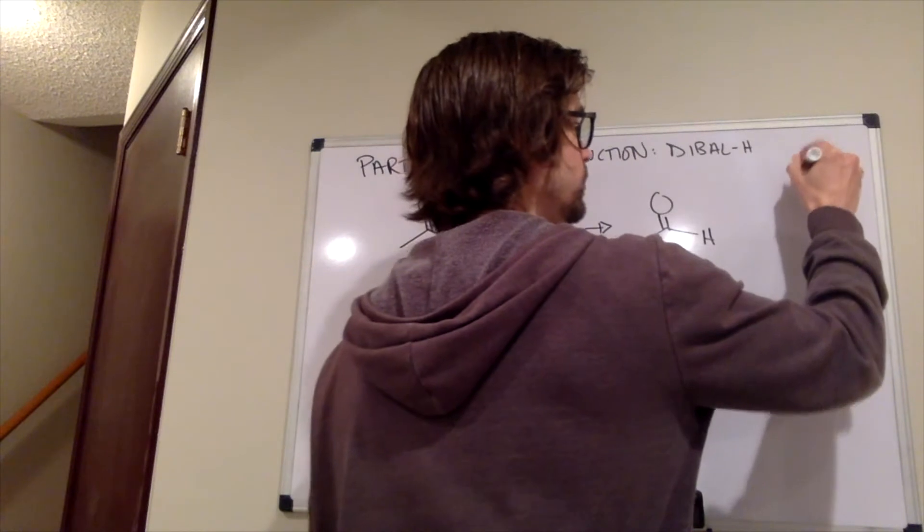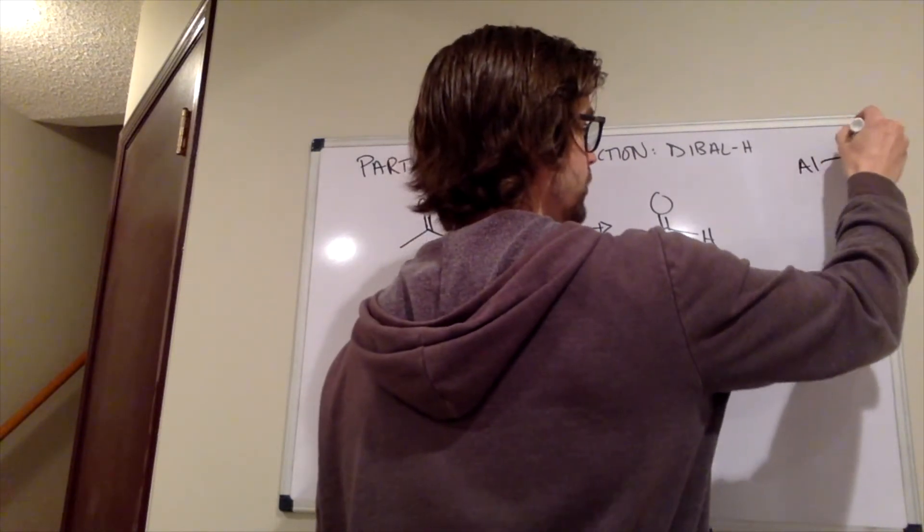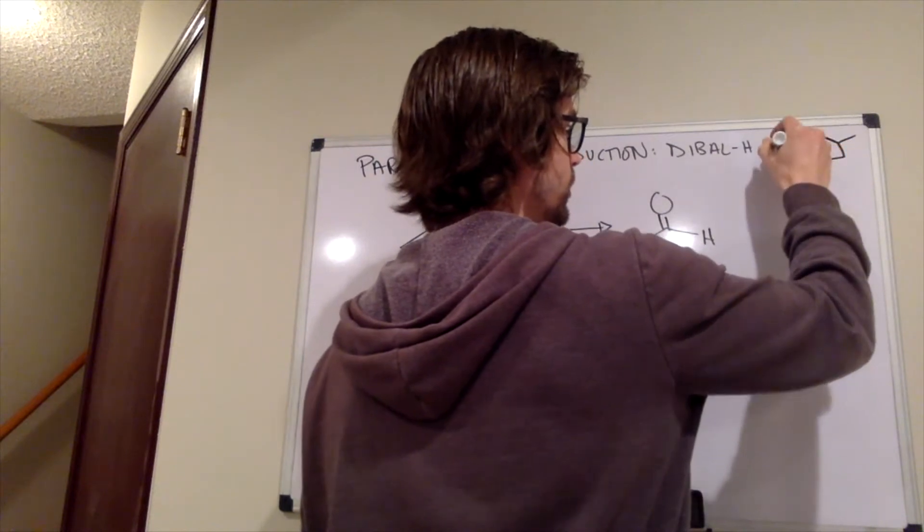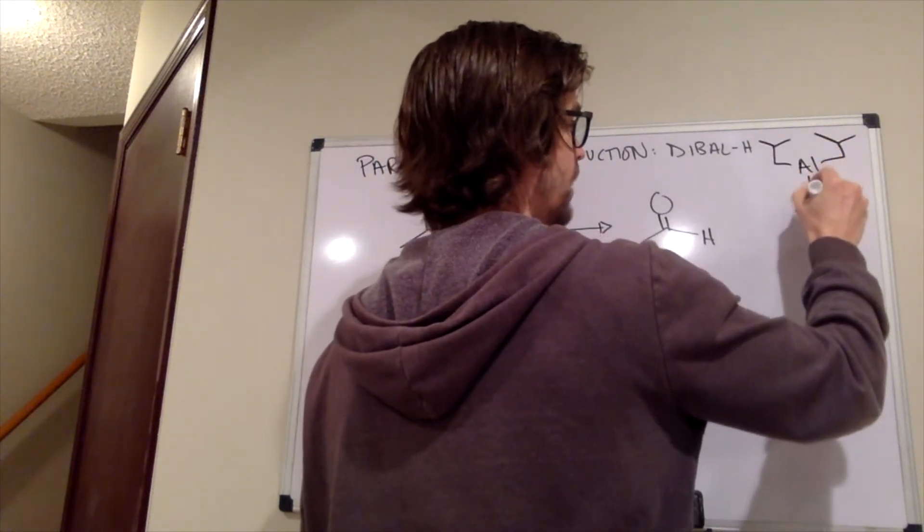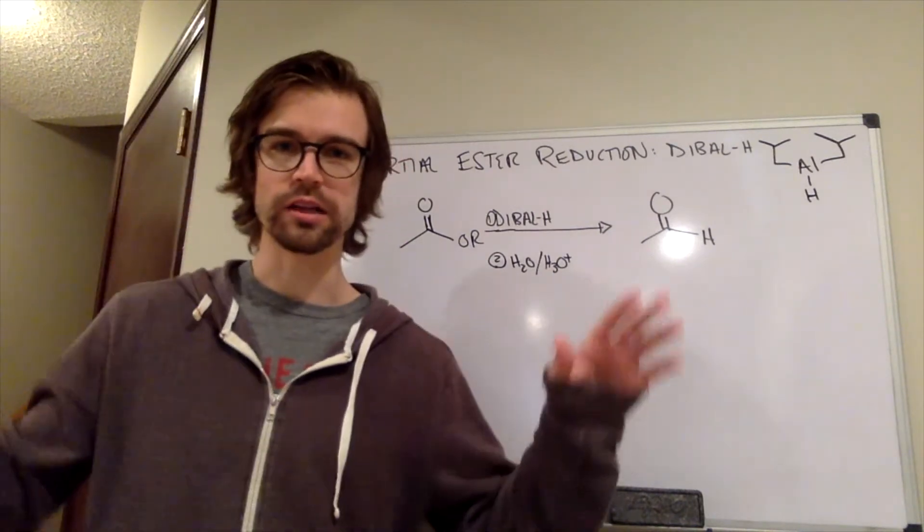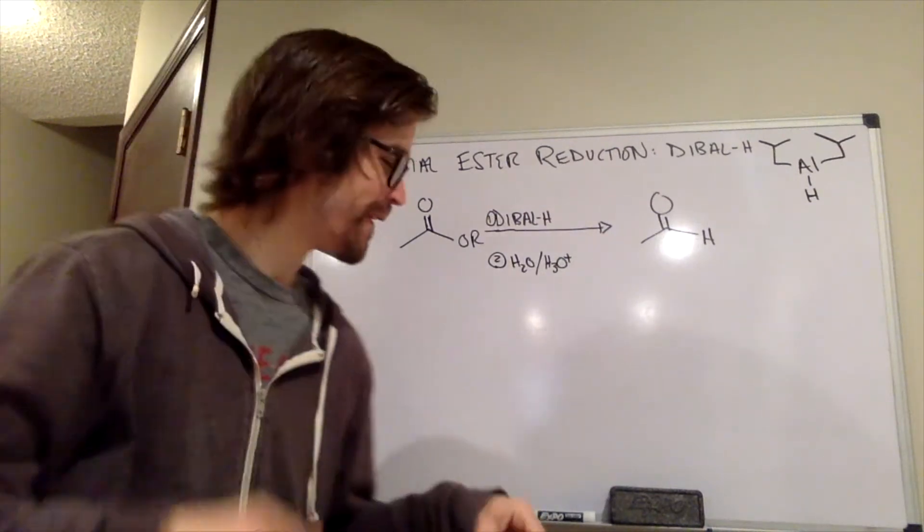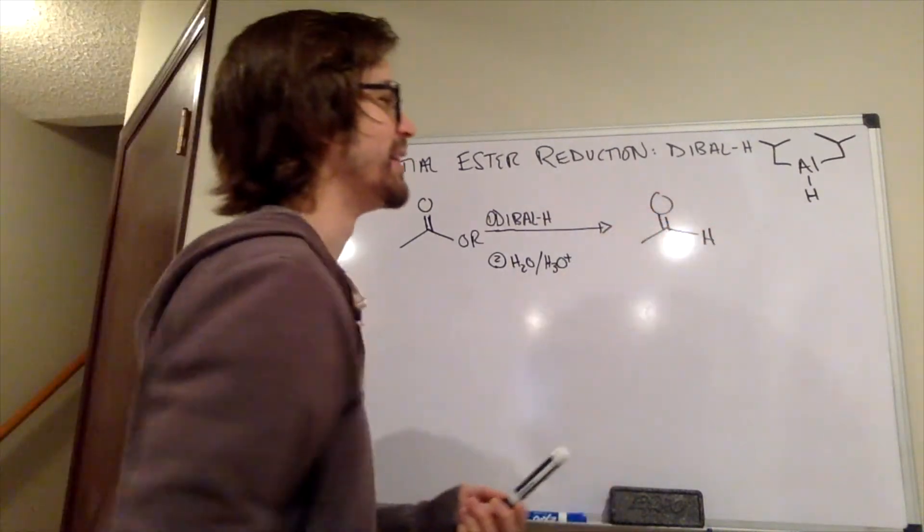So what does that look like? You have our aluminum, we have two isobutyl groups and a hydrogen on it. So the way I draw it, it kind of looks like... I don't know, that was weird. Anyway, dibal-H.